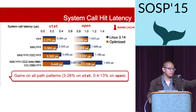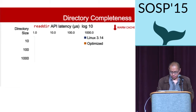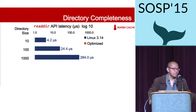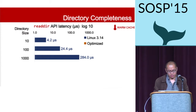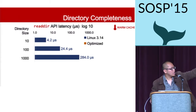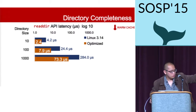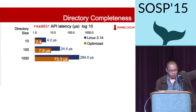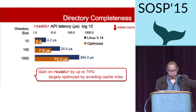For directory completeness, looking at the readdir API latency on directories of sizes 10, 100, and 1,000 files: our optimized kernel (orange bar) shows significant wins over Linux 3.14 across all sizes — around 74% improvement on directories with 1,000 files. This comes from avoiding cache misses using directory completeness.